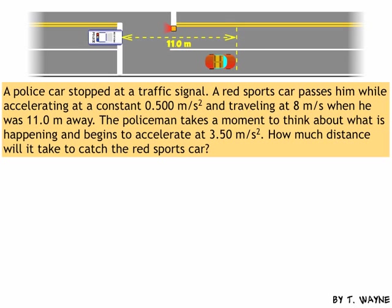In this video, we're going to explain the solution for the second example problem. A police car is stopped at a traffic signal. A red sports car passes him while accelerating at a constant 0.5 meters per second squared and traveling 8 meters per second when he was 11 meters away.